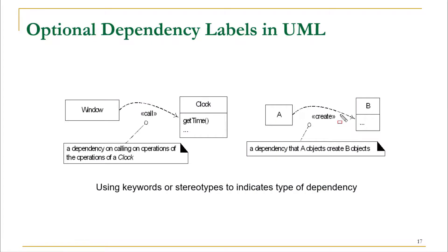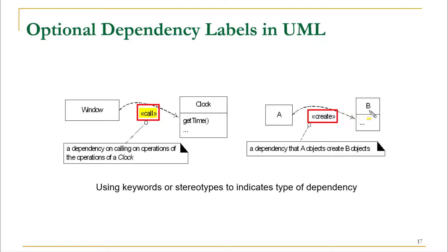When representing dependency lines, we have the option to write the reason for the dependency as a stereotype label. For example, we can indicate that the Window class depends on the Clock class because Window calls a function of Clock, or that class A depends on class B because it creates an object of class B. However, writing these stereotype names is completely optional, and to reduce diagram complexity I would recommend not writing them.